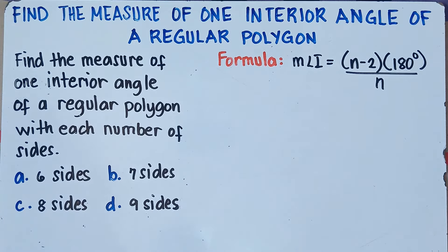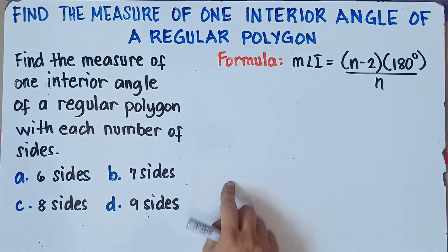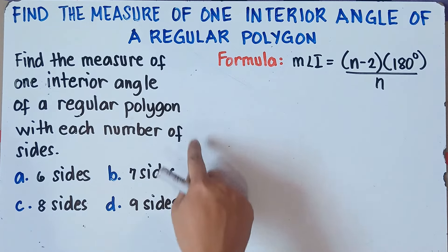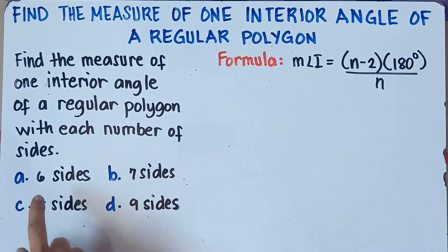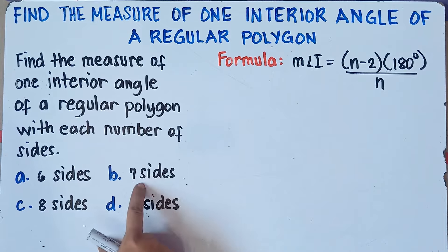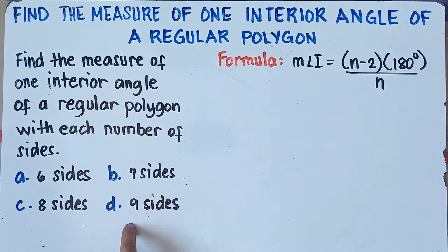Alright, so let's try this. We will have four examples for you to really understand this. Find the measure of one interior angle of a regular polygon with each number of sides: letter A, 6 sides; letter B, 7 sides; letter C, 8 sides; and letter D, 9 sides.